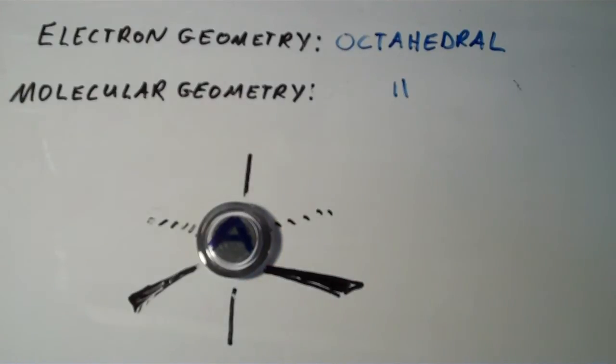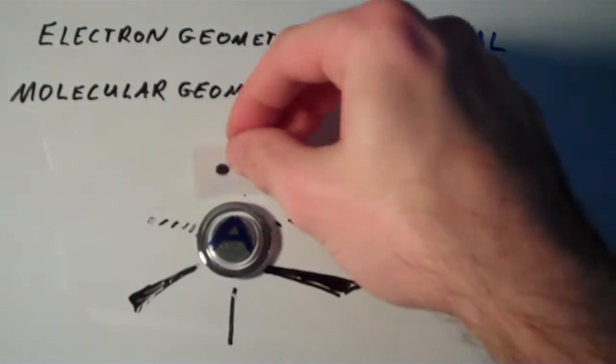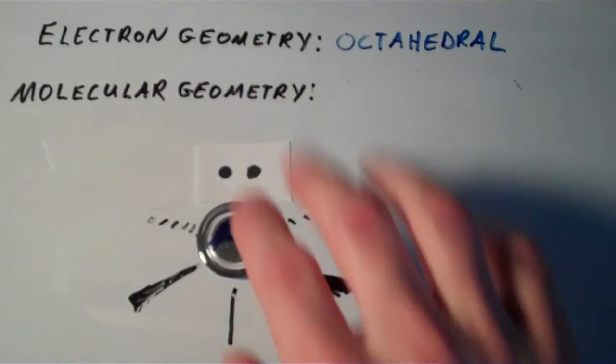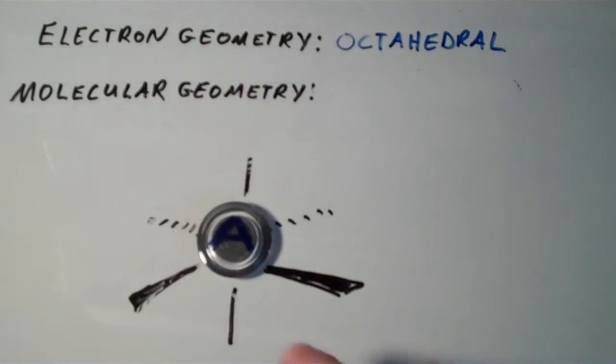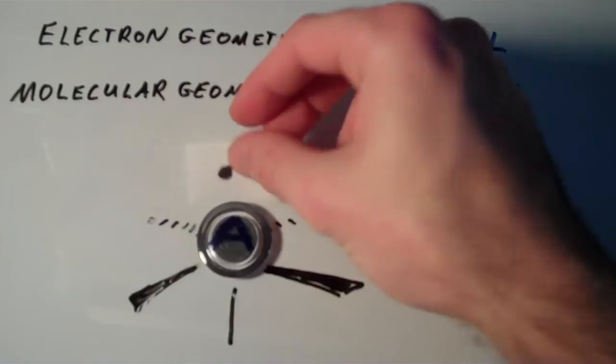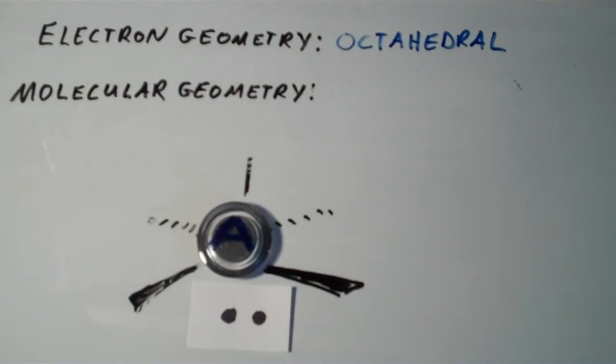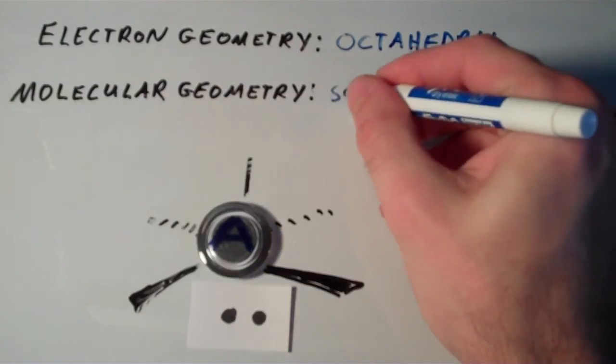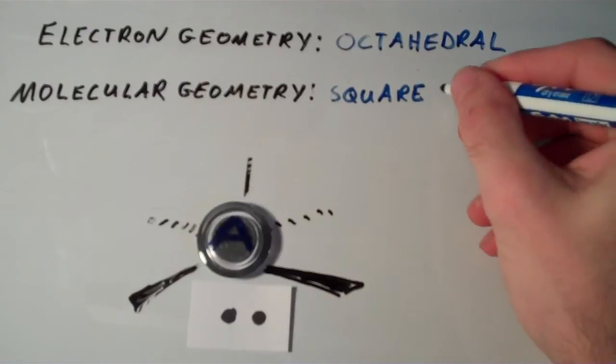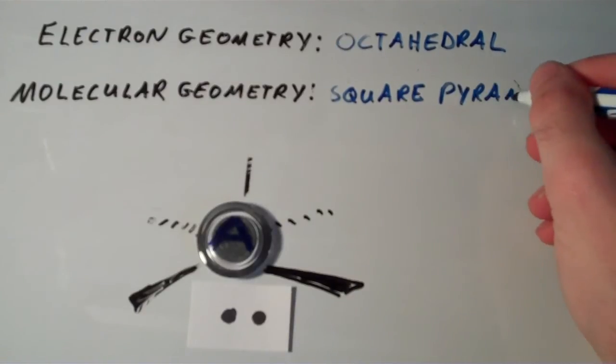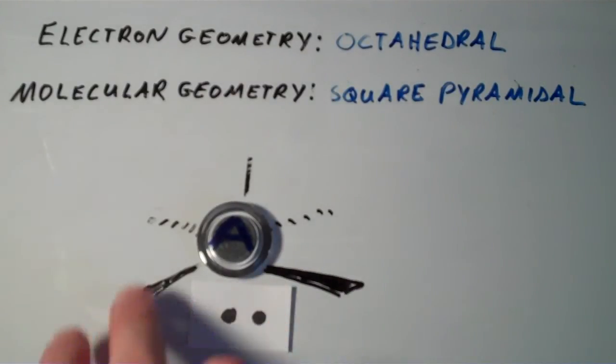But if we have one lone pair that's going to give rise to a different shape altogether. It doesn't really matter where I put the lone pair in this case because all of these positions, although it may not look like it from this point of view, but all six of these positions are equivalent. So I could put the lone pair here or here or wherever and it will all give rise to the same shape. So I'll just put it down here. And this shape is what we call square pyramidal. The shape has a four sided, it's basically a four sided pyramid and the face of it is a square.